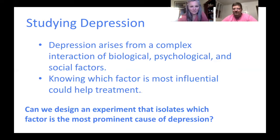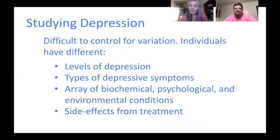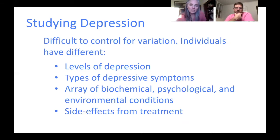This becomes super difficult to control for variation because people have different levels of depression, different types of symptoms, an array of biochemical, psychological, and environmental conditions, and potential side effects from whatever treatment we decide on. All of these things could cause variation in our data. In our last study we could just say here are two pieces of paper — the same resume, just John and Jennifer as the only difference. How can we weed through all this? Is it possible?